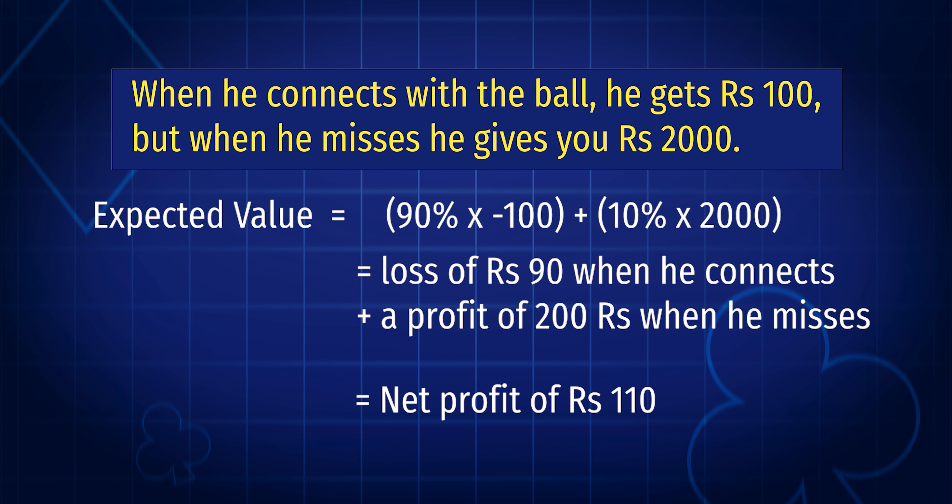So even though the batsman connects or misses with the same probability in both situations, by changing the odds this is now a good deal for us. The first bet was minus EV for us and the second bet was plus EV for us. That's all for this video — keep watching the other videos of Focus School for a better understanding of this beautiful game.